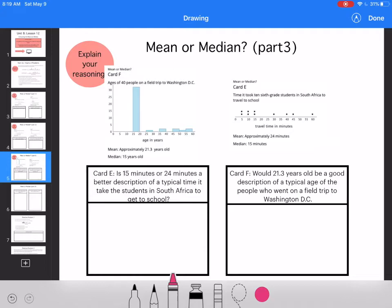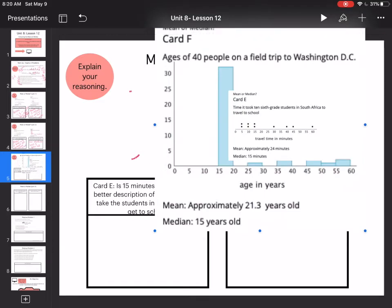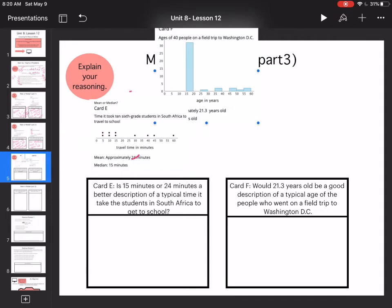Is 15 minutes or 24 minutes a better description of the time it takes students in South Africa to get to school? 24 minutes would be right here, and that's a gap in the data. So I'm going 15. Wait a second, these two cards are backwards. I'll fix these before I send it to you guys. That makes way more sense now.